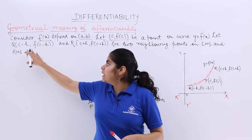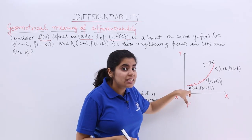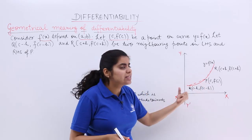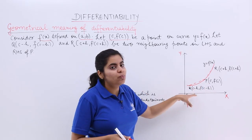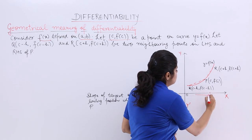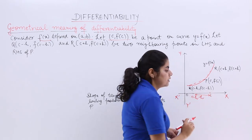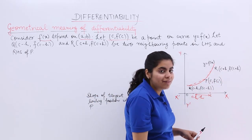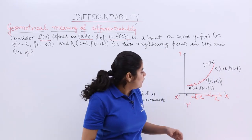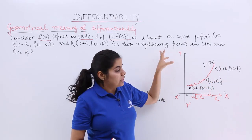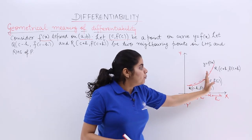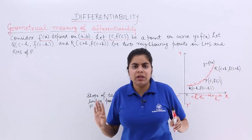Let Q = (c−h, f(c−h)) be another point. So to the left of P, h units to the left, is the point Q, which has x-coordinate c−h and y-coordinate f(c−h). Basically, if P is at c, this distance is h, so it becomes c−h. Similarly, going forward we also have point R. If we go h units to the right, we get point R = (c+h, f(c+h)), the neighboring point on the right-hand side. So Q is to the left of P and R is to the right of P.